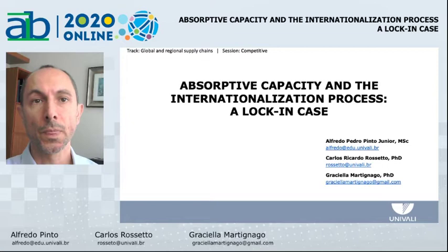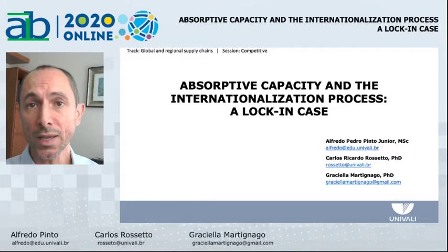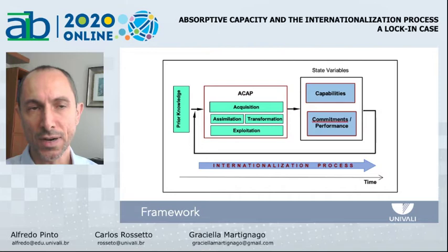Uppsala is the most used model to explain the internationalization process. In this model, experiential knowledge plays a major role in the international commitment of the multinational enterprise. However, Uppsala does not explain what happens to the experiential knowledge when it gets into the MNE, and the Academy itself has moved quickly to cross-sectional studies where the how and why of the internationalization process are not the focus. Our study aims to explain how relevant external information is identified.